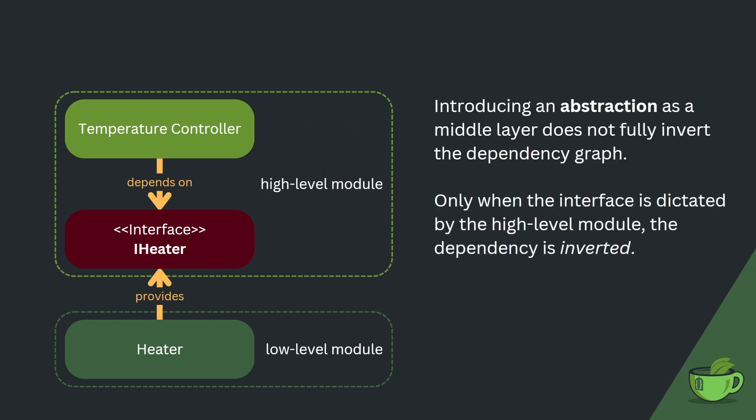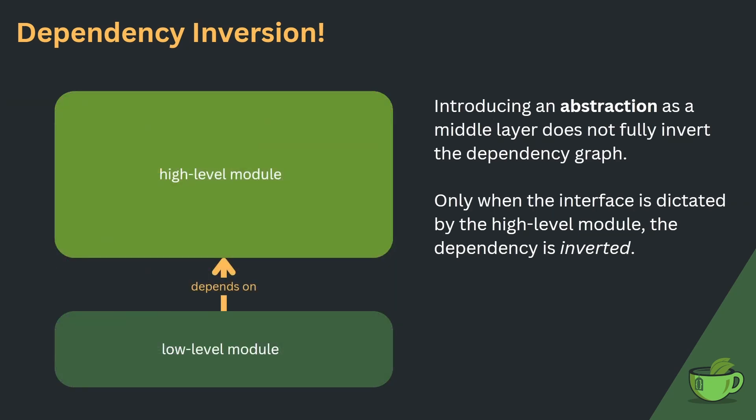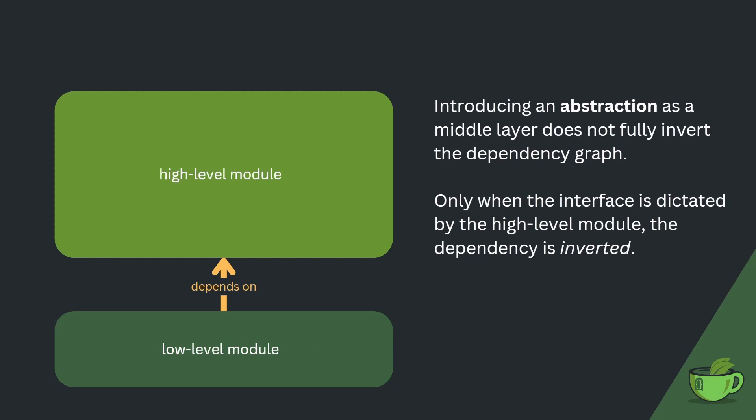But the temperature controller still depends on the public API of the IHeater interface. The really important part — and this is something that so many developers don't fully understand — is that the interface definition needs to be dictated by the high-level module, so that it becomes a part of it. Then, and only then, we can speak of dependency inversion. This becomes quite evident if we make the modules themselves opaque: only one dependency arrow remains, pointing upwards from the low-level module towards the high-level module.